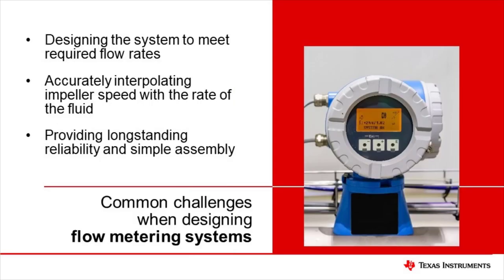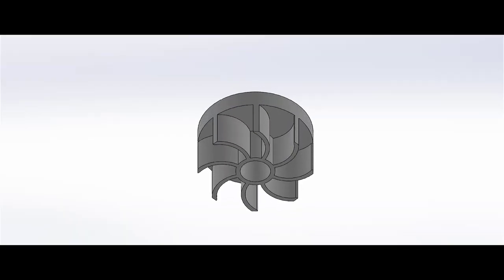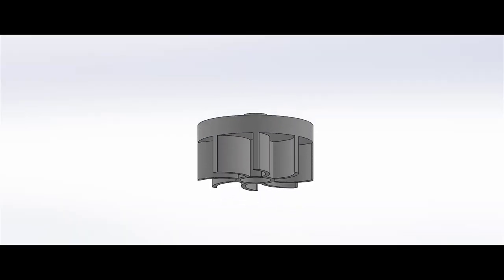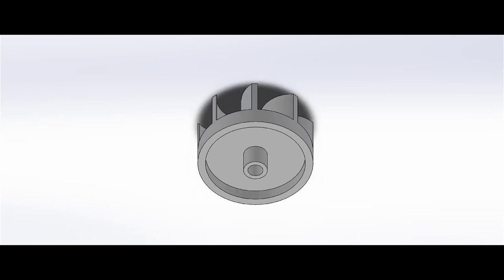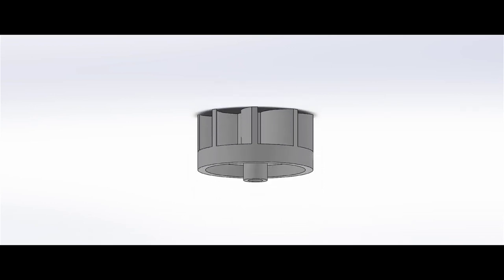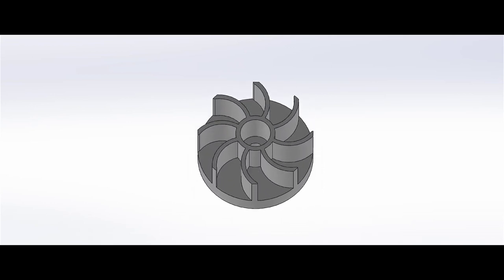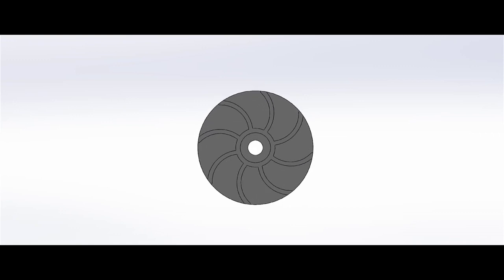In flow metering systems, it is important to be able to accurately determine the flow of a liquid. As the liquid flows through the flow meter, it rotates a mechanical assembly known as the impeller. The impeller is fixed with magnets such that a Hall sensor can detect the change in the magnetic field as the impeller rotates. The Hall Effect Sensor outputs a frequency which is proportional to the flow rate of a liquid.